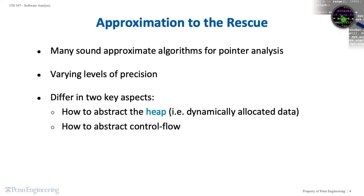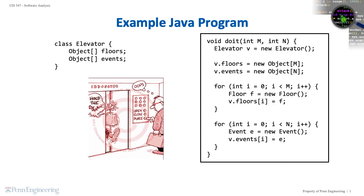Let's dive deeper into data and control flow abstractions for pointer analyses using an example program. Throughout this lesson, we will use this Java program to illustrate the key concepts of pointer analysis. This program constructs a representation of an elevator. An elevator object has two fields: one field is an array of floor objects representing different floors in a building such as the basement, first floor, second floor, and so on; the other field is an array of event objects.